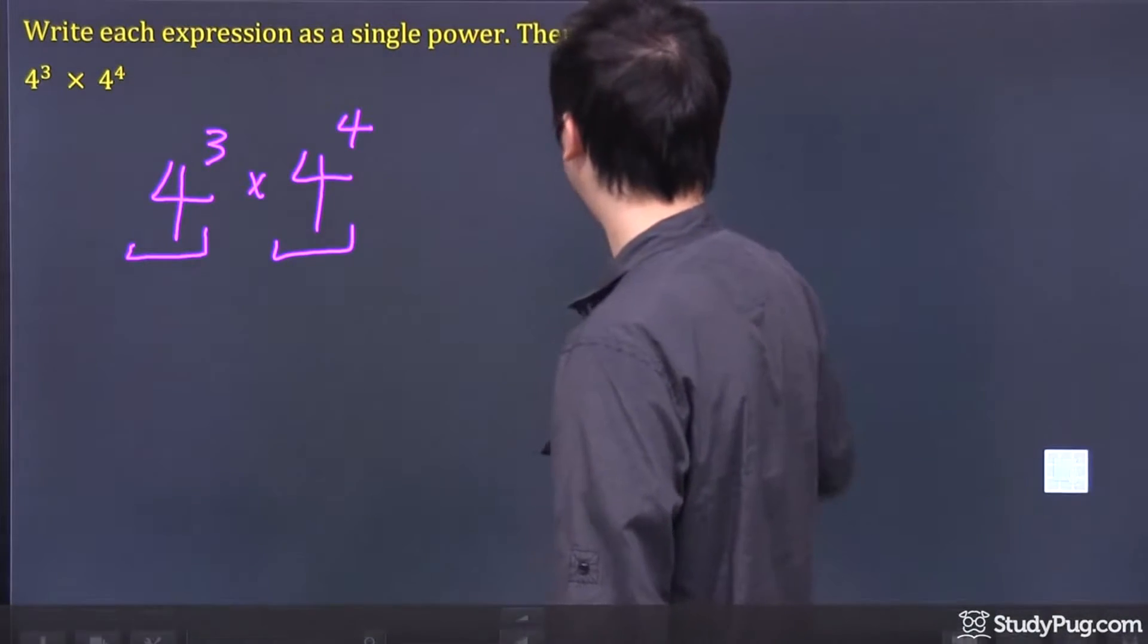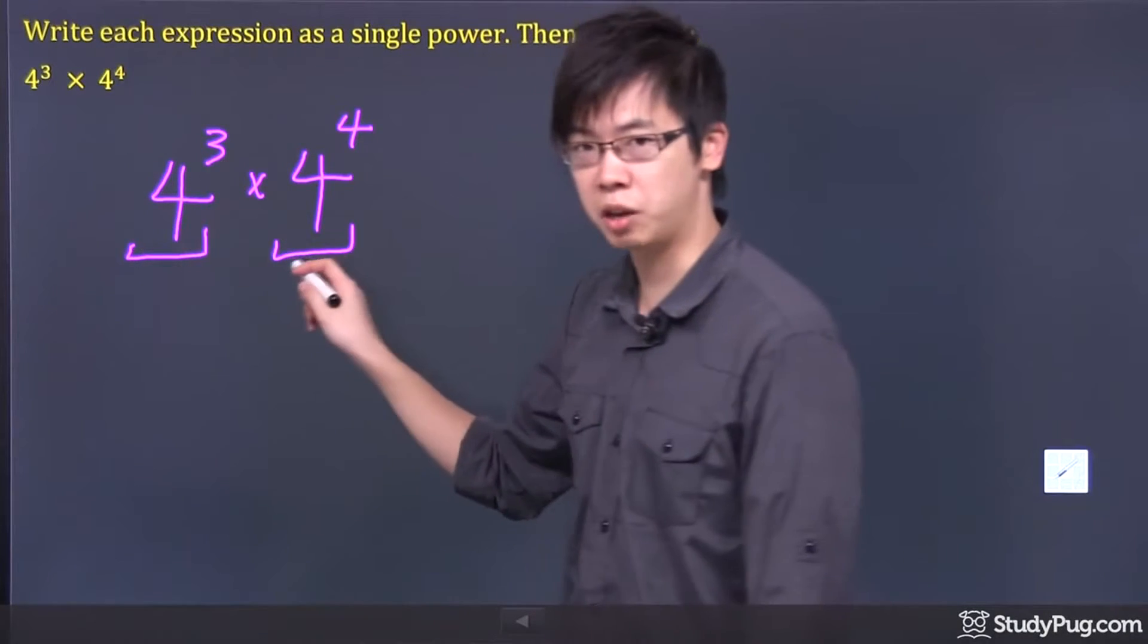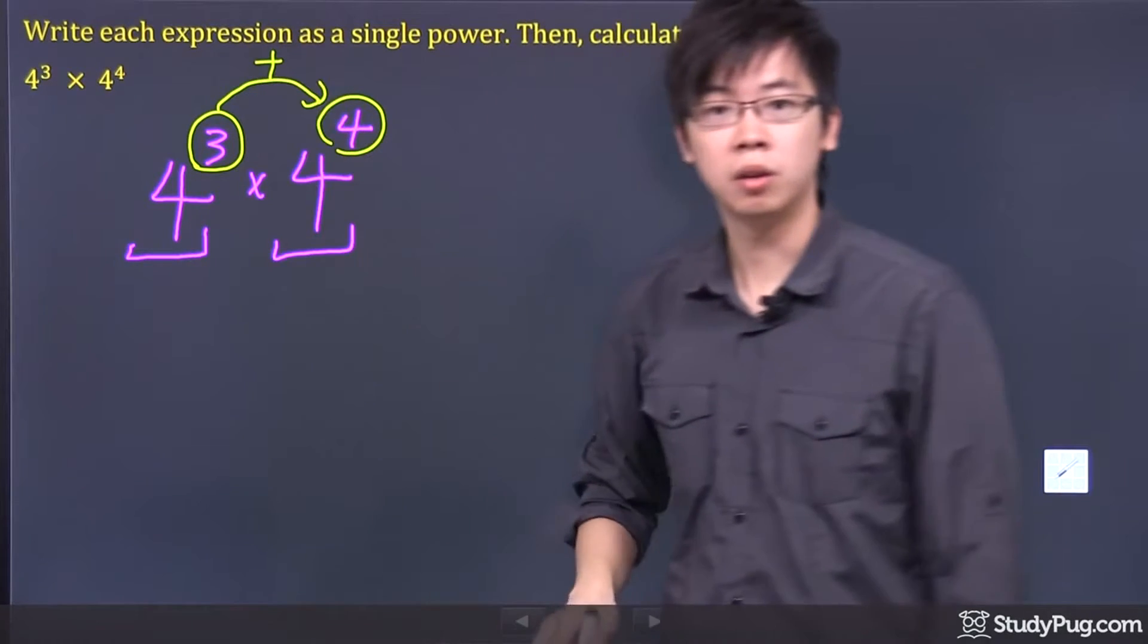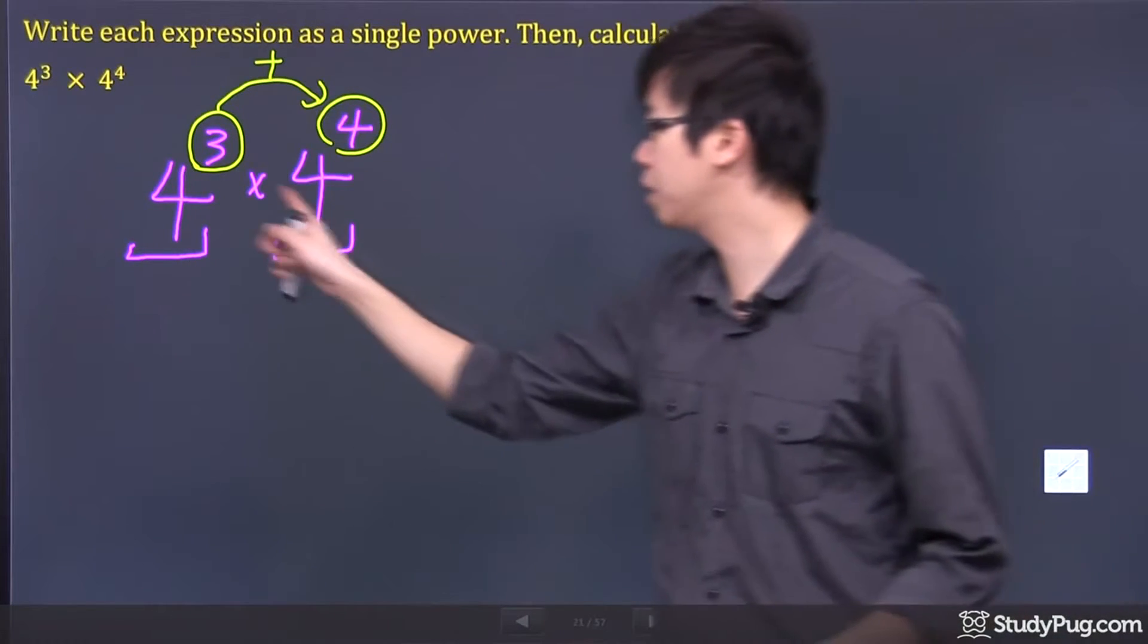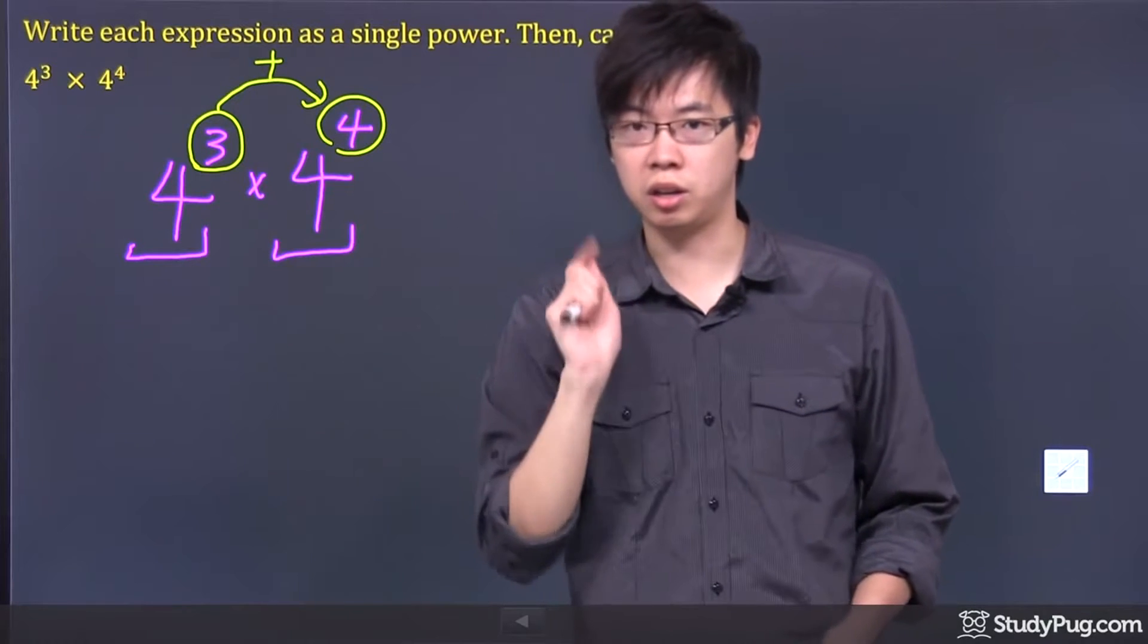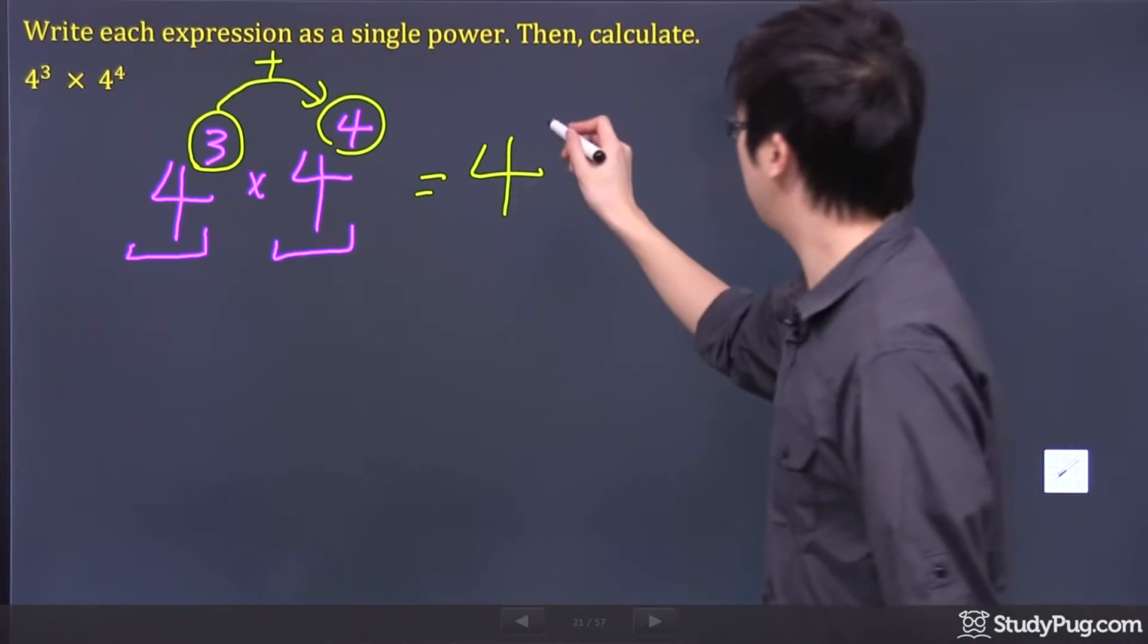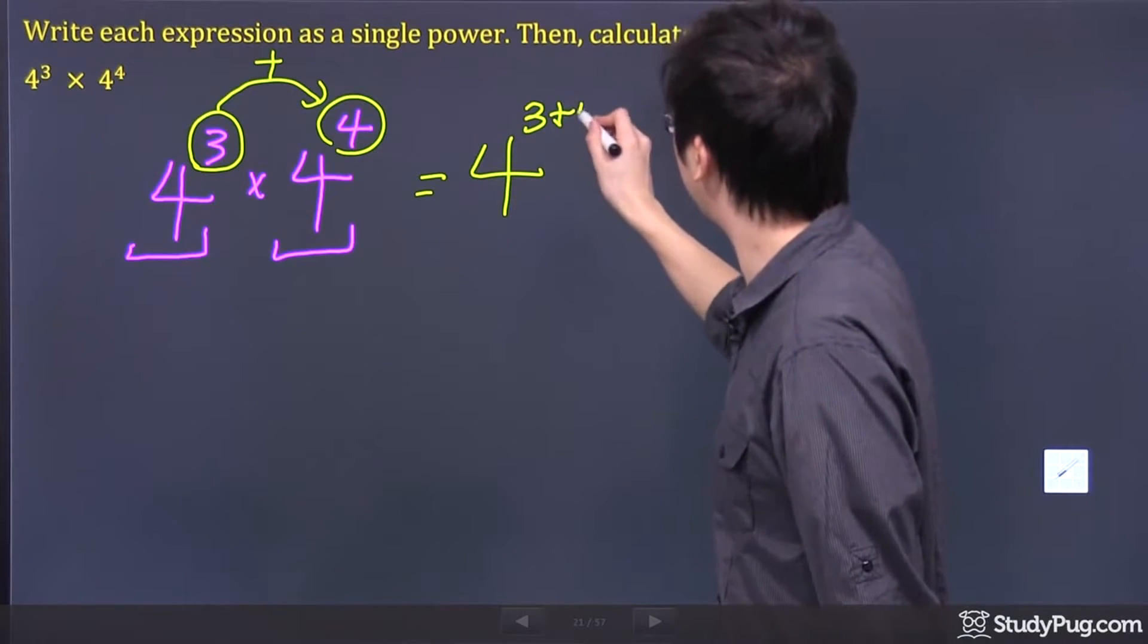So what we have is that if the base number is the same, this number right here and this number here can now be added together. It's given that the base for both numbers are identical. So what happens is you just have to recopy the base over, and then it's simply 3 plus 4 on the top. I'm just showing a little bit of my work.